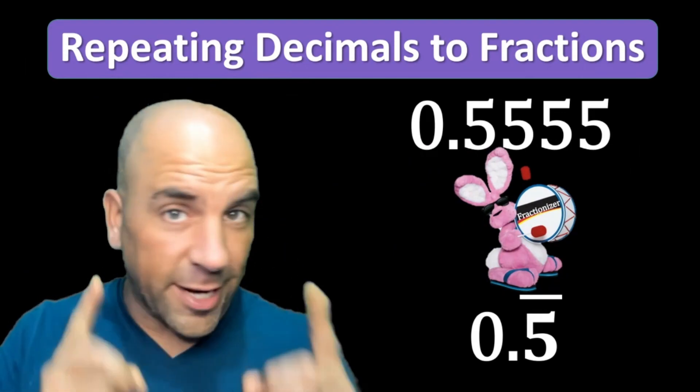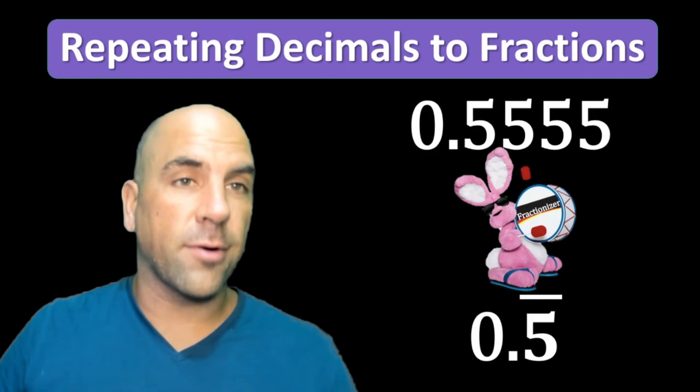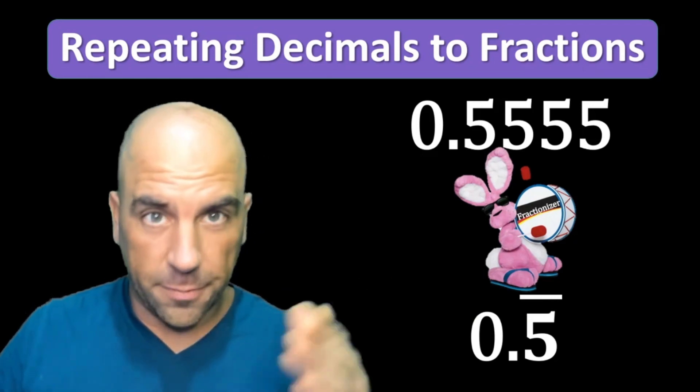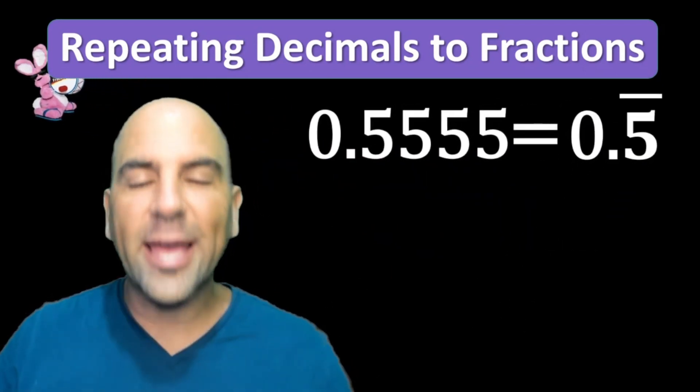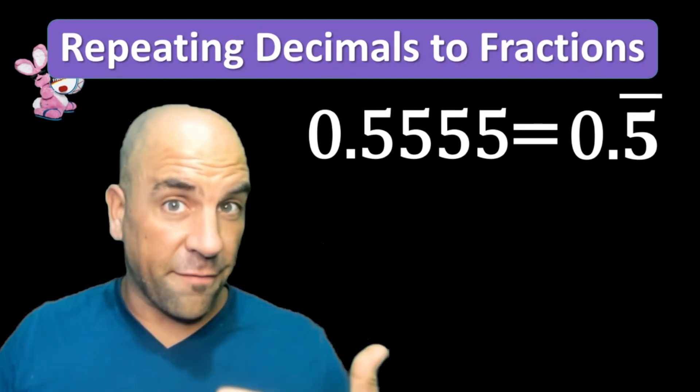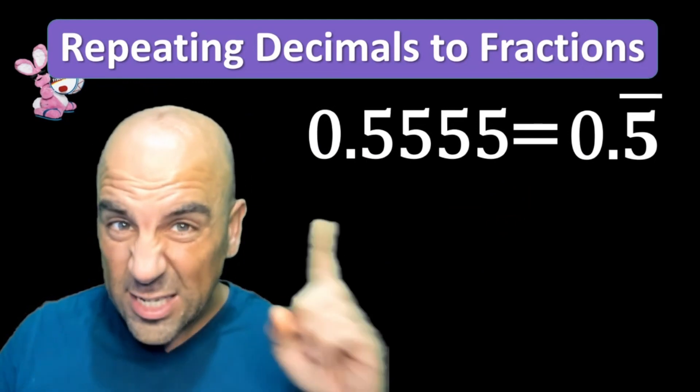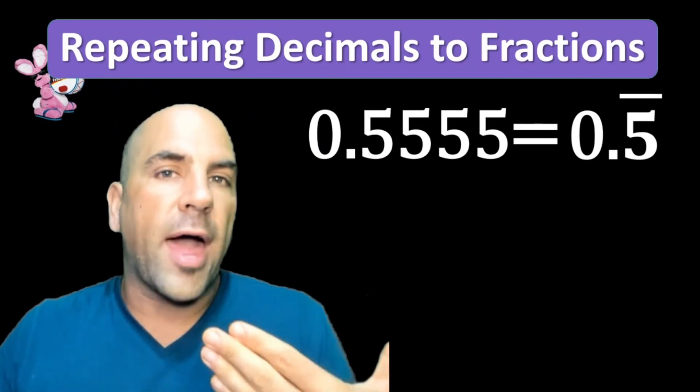Let's talk about repeating decimals and how to turn them into fractions. We have our fractionizer bunny which keeps going and going like our decimals. Let's start with 0.5555. When 5 repeats, we draw that in standard notation as 5 with a line over the top.